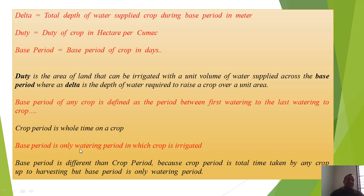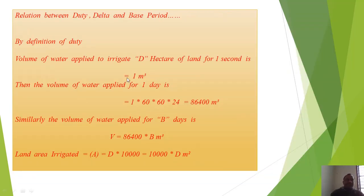Base period is only the watering period in which crop is irrigated. Note: base period is different than crop period because crop period is total time taken by any crop up to harvesting, but the base period is only the watering period.